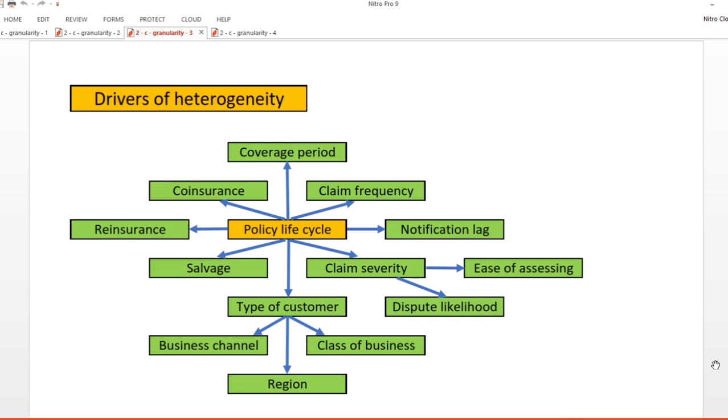However, if we keep moving along the policy lifecycle, we find a whole host of other potential drivers of heterogeneity. Firstly, are the different coverage periods being provided within each of our modelling segments. Annual policies are pretty ubiquitous, but not always, and it's easy to check this in your policy database. Policies with longer coverage periods will naturally see more claims and later notification of those claims. So it's important to know if these exist and to consider isolating them from the more standard policies.